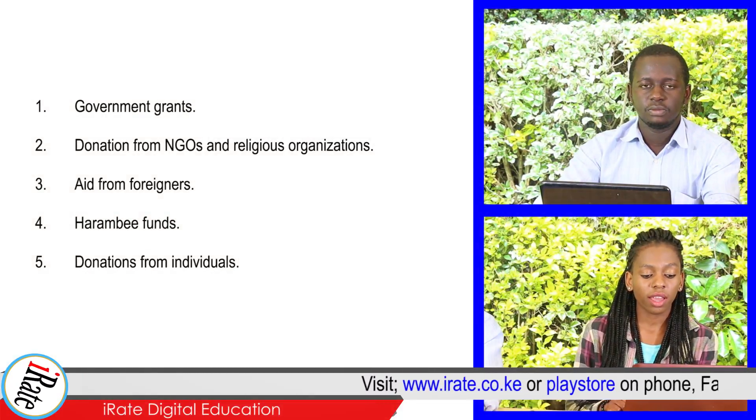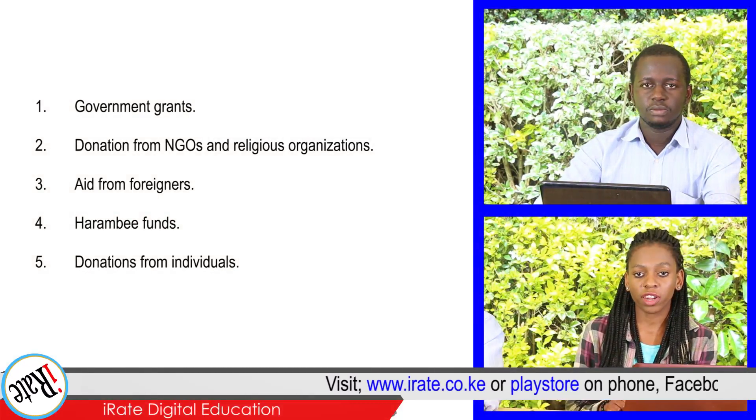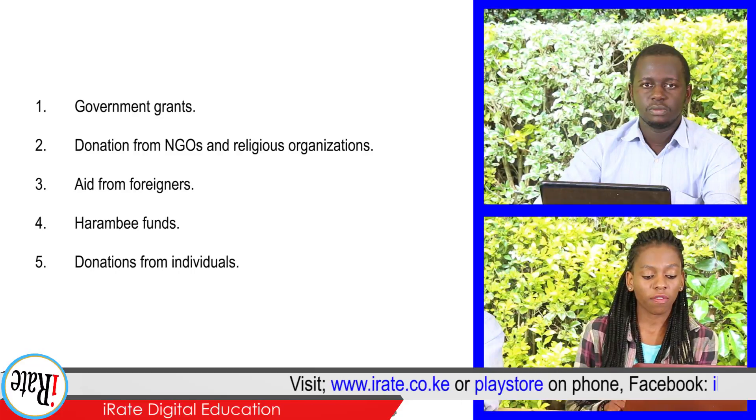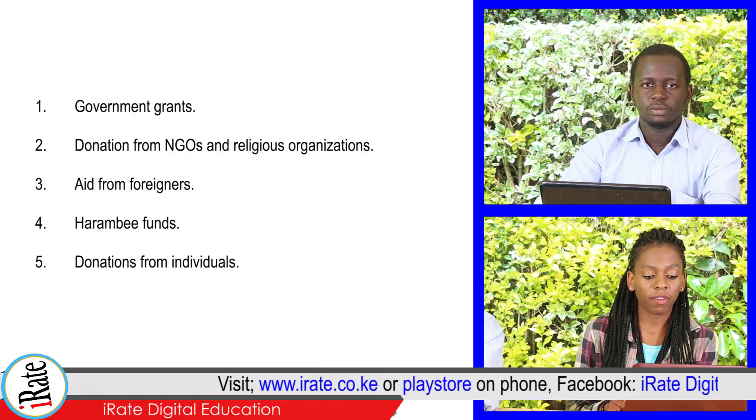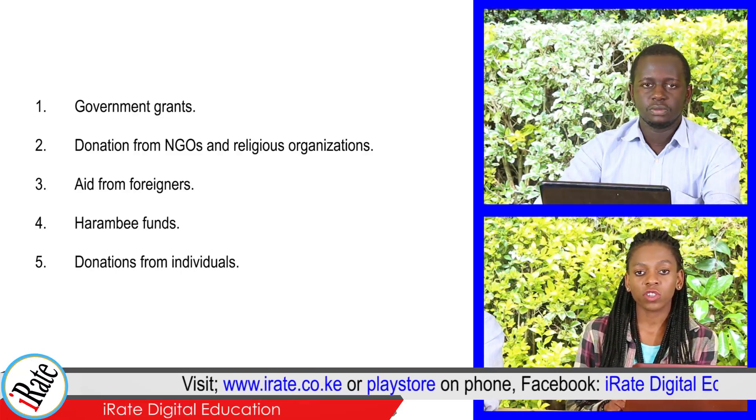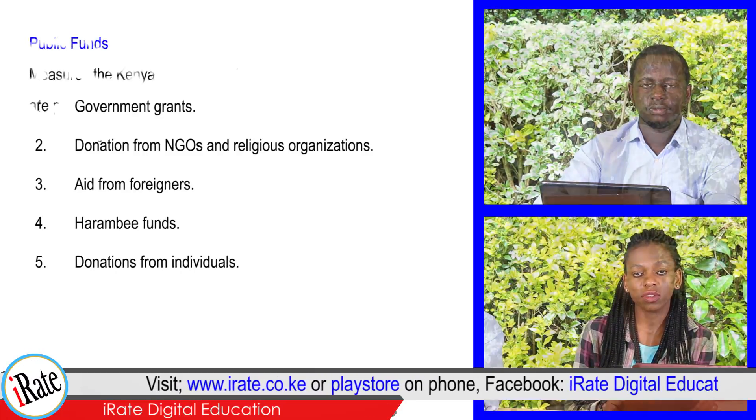Number three, aid from foreigners. Number four, harambee funds. Number five, donations from individuals.